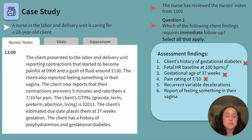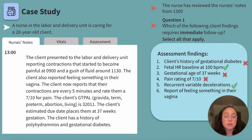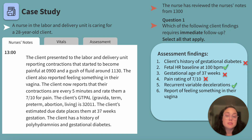Recurrent variable decelerations are definitely reason for immediate follow-up — we're seeing a consistent interruption in umbilical cord blood flow to the baby. Reporting a feeling of something in their vagina seems odd; we don't really expect a laboring client to feel something in their vagina, at least not until birth. But combined with the other two options, this could be a symptom of something emergent. Any ideas what it is? Let's continue.